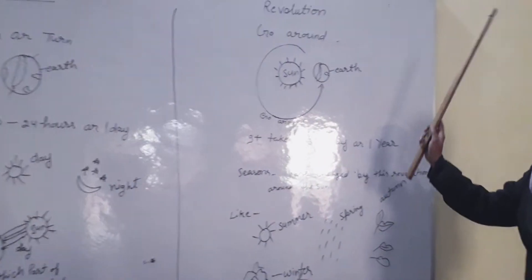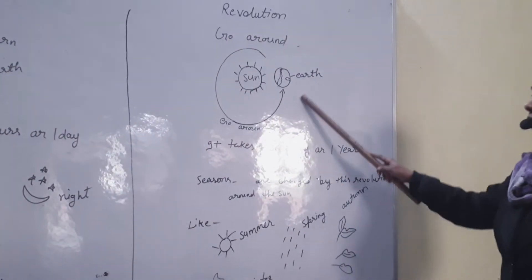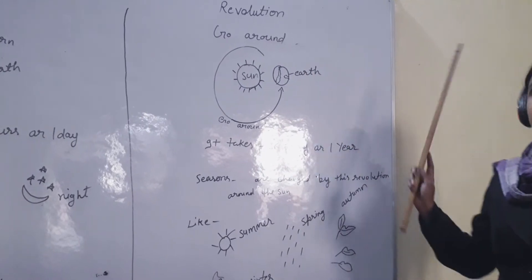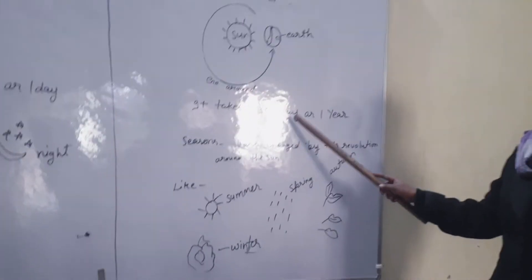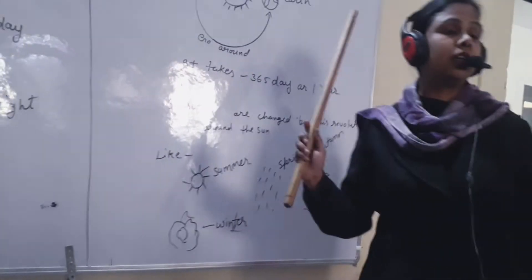Next, revolution. When earth goes around the sun, this is called revolution. It takes 365 days or 1 year to complete its revolution.